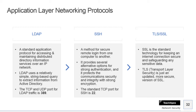LDAP is a standard application protocol for accessing and maintaining distributed directory information services over an IP network. It uses relatively simple string-based queries to extract information from Active Directory — you can use specific commands and queries to retrieve information related to Active Directory. The TCP and UDP port for LDAP traffic is 389.